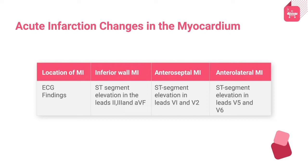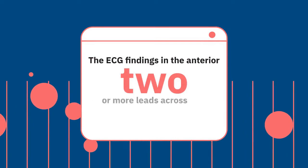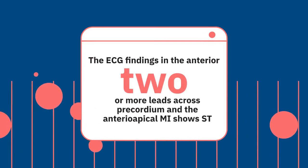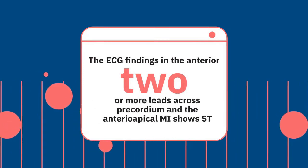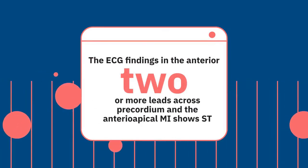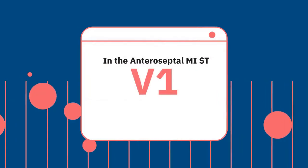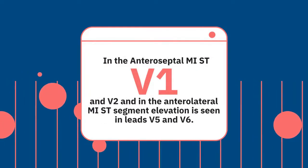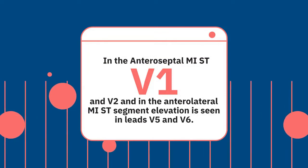In anteroseptal MI, ST segment elevation is seen in leads V1 and V2. In anterolateral MI, ST segment elevation is seen in leads V5 and V6. The ECG findings in anterior wall MI show ST segment elevation in two or more leads across the precordium, and anterior-apical MI shows ST segment elevation in leads V3 and V4.